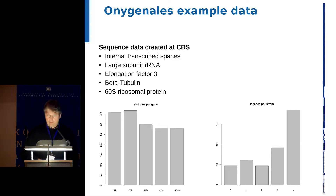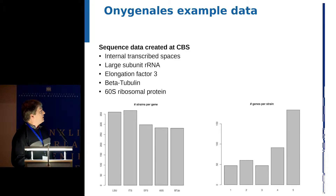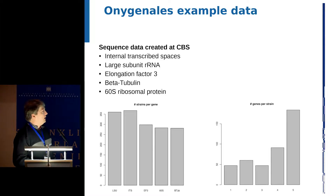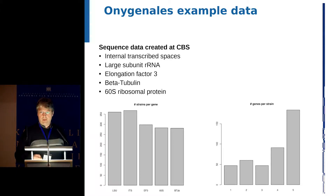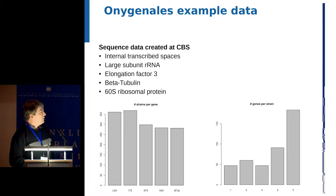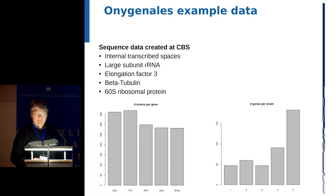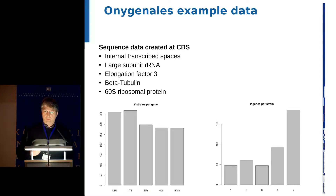I will now move to the main fungal dataset. This Onyginalase dataset has only recently been created, so I can only provide a very preliminary analysis. An impressive number of sequences has been generated at CBS. But as usual in such datasets, the genes are not necessarily evenly distributed — this does not mean we have 300 sequences for all of them. Black means the gene is present, white means it is absent. For the moment, I have analyzed only the subset for which all five genes are available for all taxa.